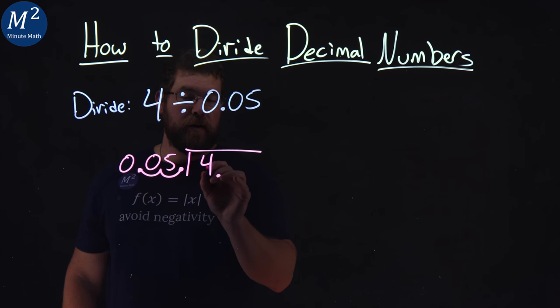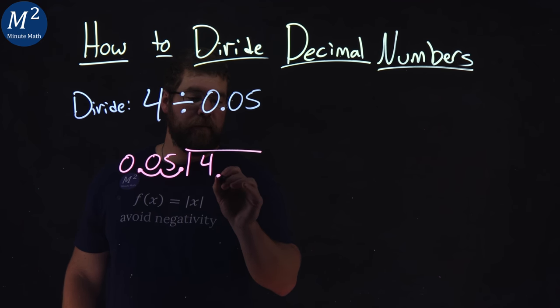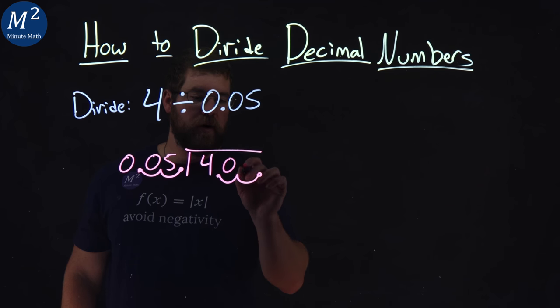If I do that, there's a decimal place here next to the 4. I have to do that twice as well. 1, 2. So now we have 400 here.